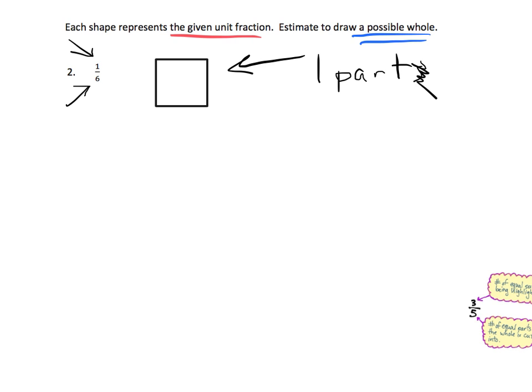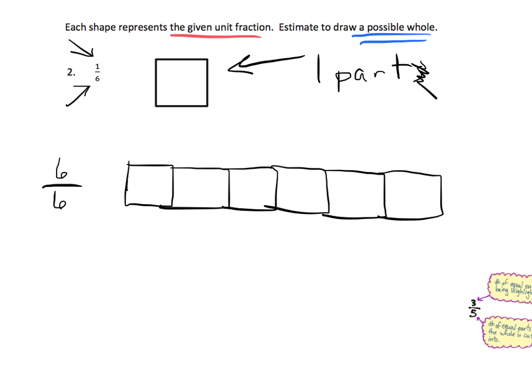So that's one part, so if we want to draw one whole that means we want to draw six sixths. So we're going to need one, two, three, four, five, six. So there is a picture of what one whole would look like.